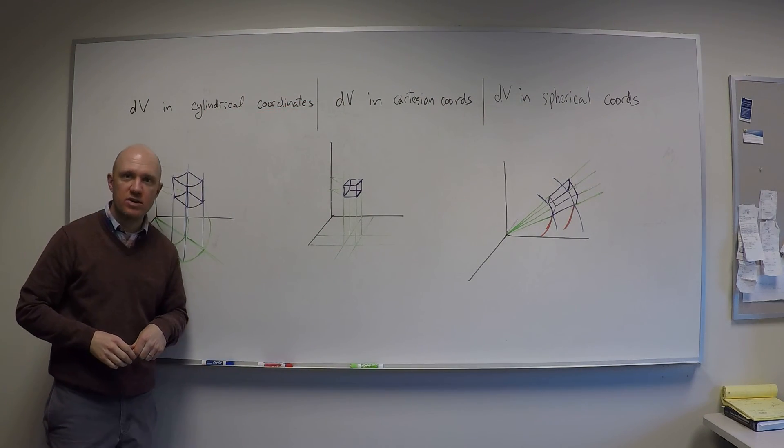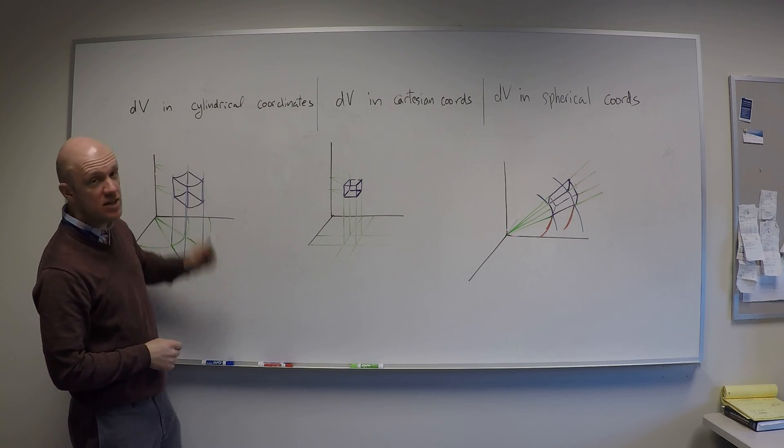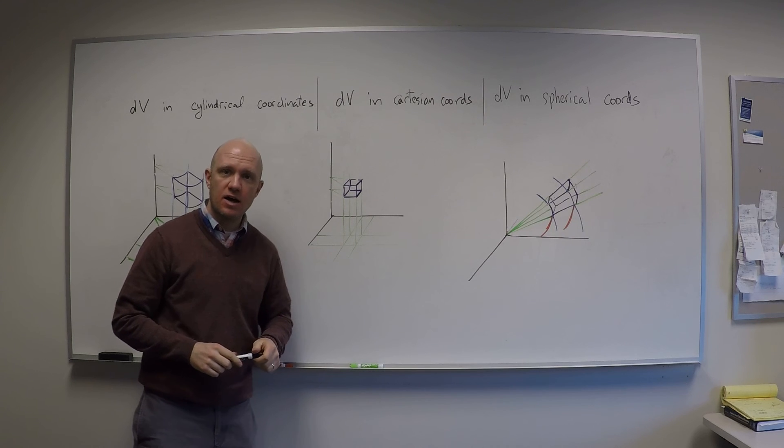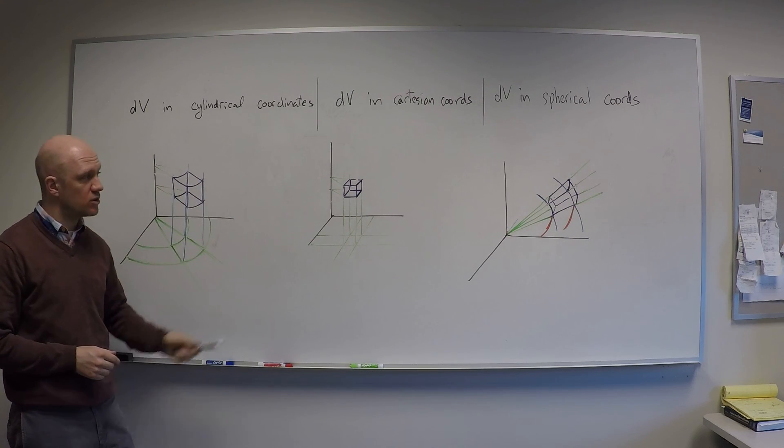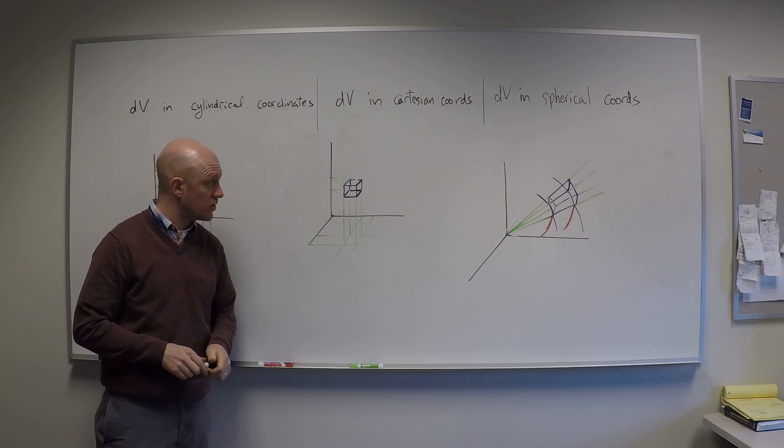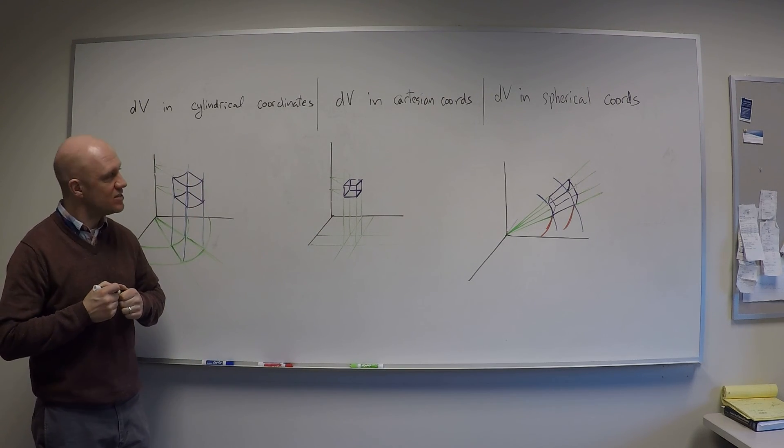I've got three nice pictures drawn here to tell you about dv, the volume element, the infinitesimal bit of volume, in the three different coordinate systems in three dimensions that we care about. I'll tell you about the Cartesian coordinate system first. In some sense it's the easiest one.